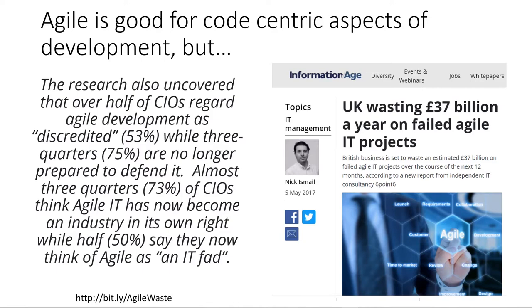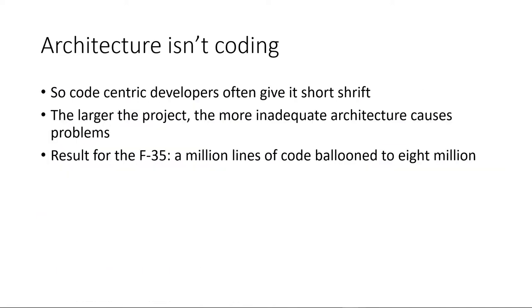It's my opinion that one cause of this displeasure is that agile tends to give short shrift to design and architecture. A lot of agile proponents would claim that means teams are not doing agile right, and they may be correct, but it still means that just doing something described as agile does not necessarily protect you from developing bad apps. Architecture isn't coding, so I suggest that if you use agile, make sure overall big-picture architecture gets enough attention — that might mean taking it outside the agile process. One of the reasons a million lines of code in earlier fighter jets ballooned to eight million for the F-35 was poor architecture.